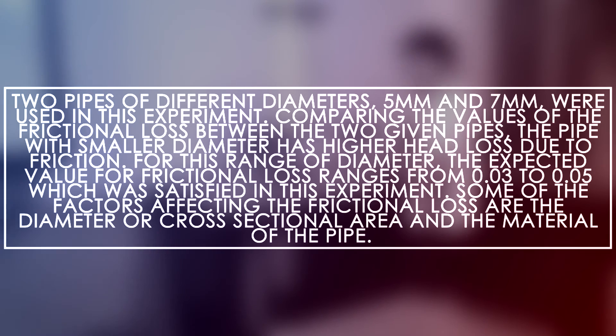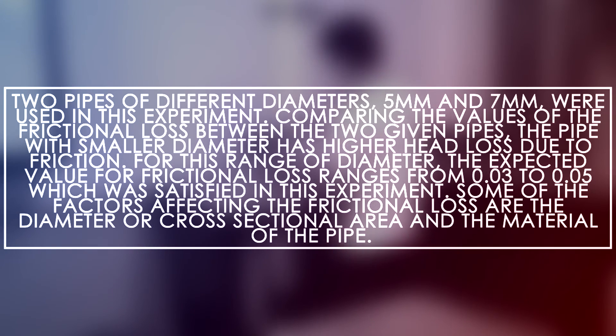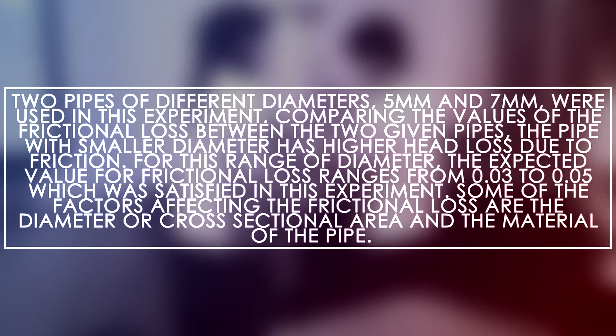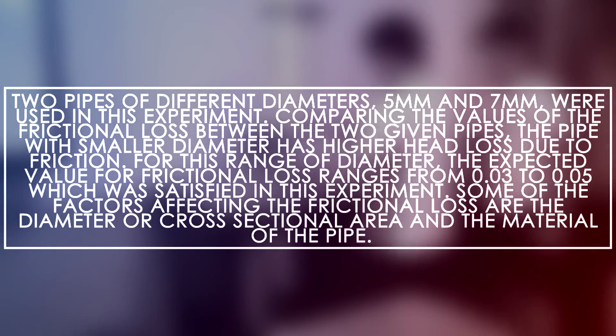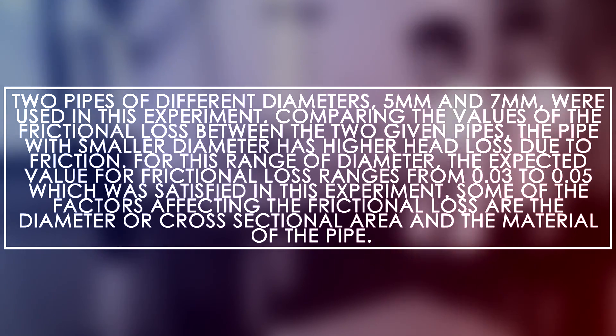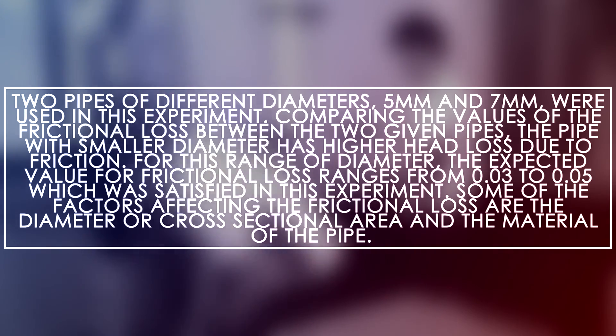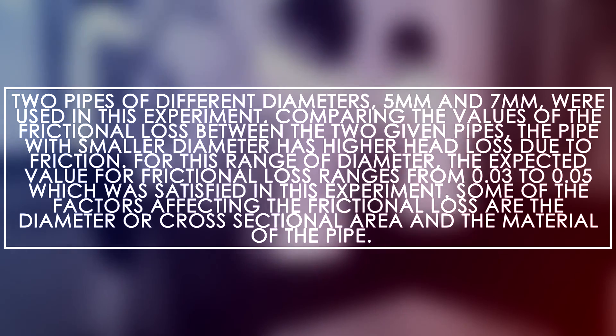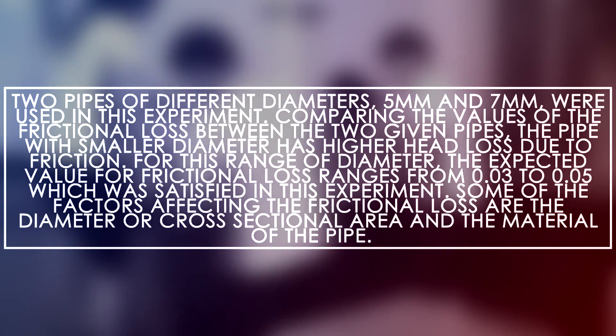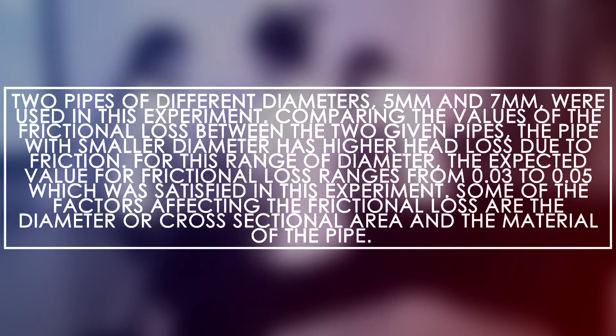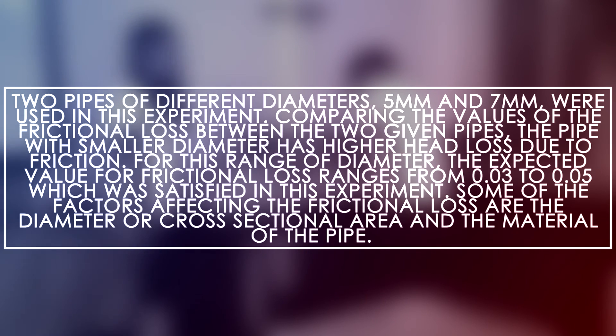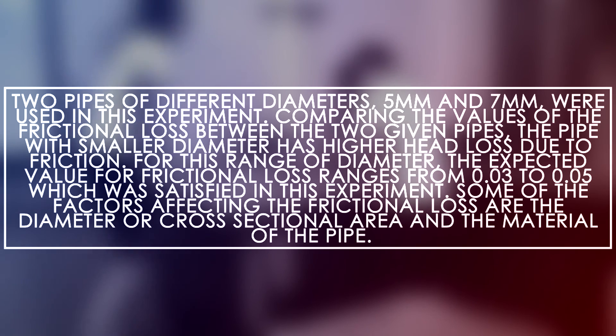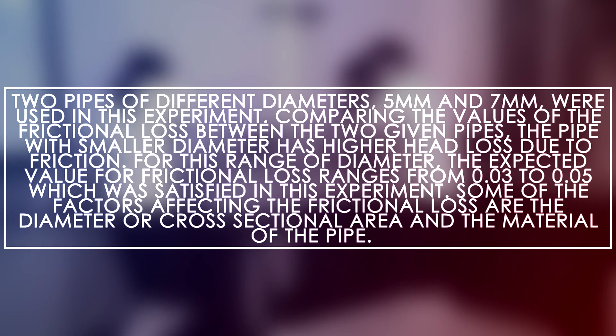Conclusion. Two pipes of different diameters 5mm and 7mm were used in the experiment. Comparing the values for the frictional loss between the two given pipes, the pipe with smaller diameter has higher head loss due to friction. For this range of diameter, the expected value for frictional loss ranges from 0.03 to 0.05, which was satisfied in this experiment. Some of the factors affecting the frictional loss are the diameter or cross-sectional area and the material of the pipe.